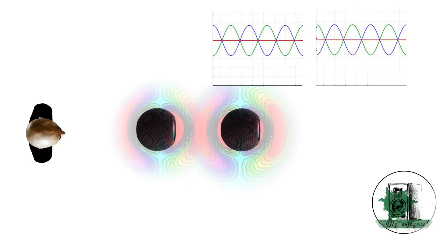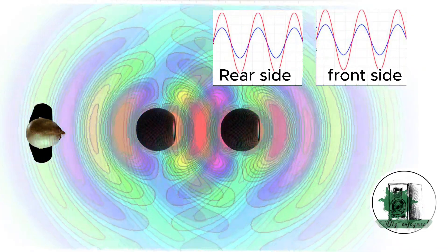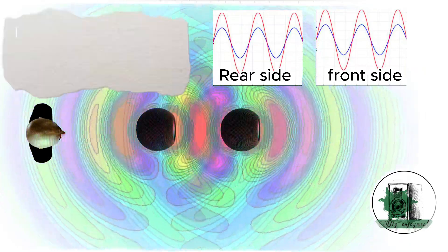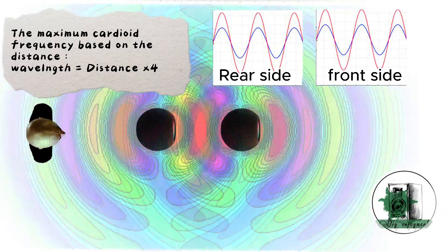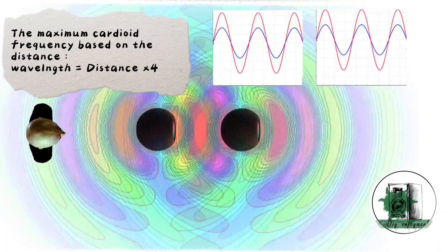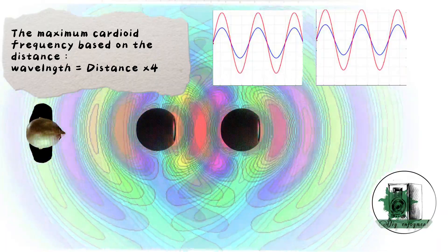Applying the same electronic delay as before will now amplify the sound on both the front and rear sides. From this observation, we can conclude that this setup effectively works for frequencies up to the point where the wavelength is 4 times the distance between the drivers.